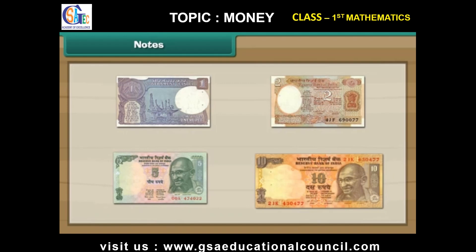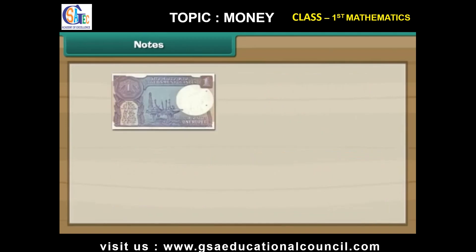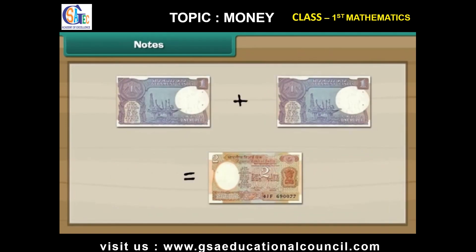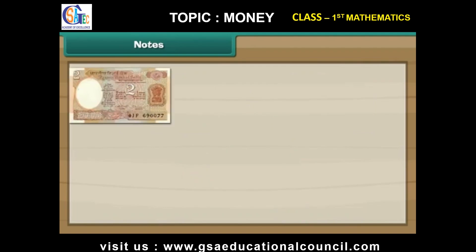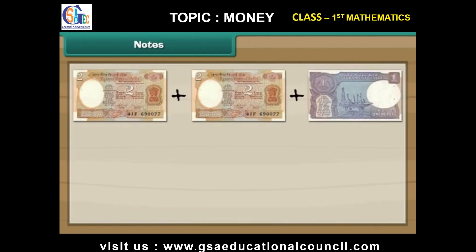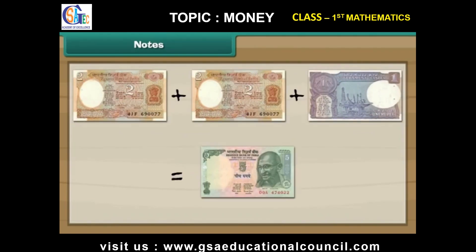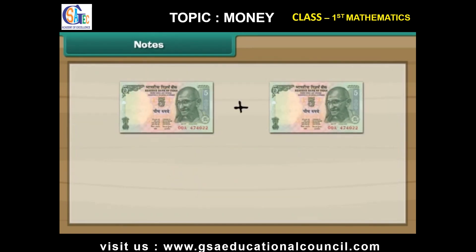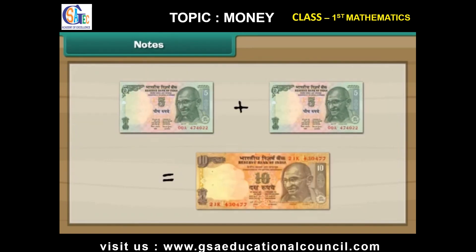Let us now look at the different combinations of notes. Two 1 rupee notes make 2 rupees. Two 2 rupee notes and one 1 rupee note make 5 rupees. Two 5 rupee notes make 10 rupees.